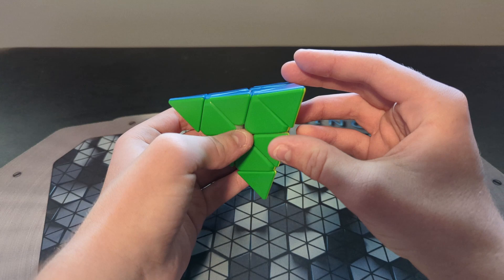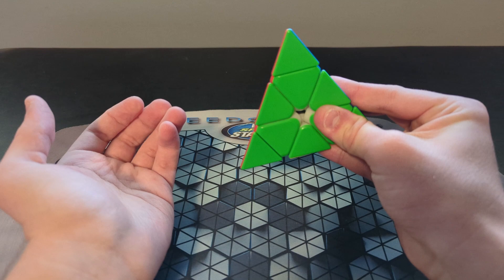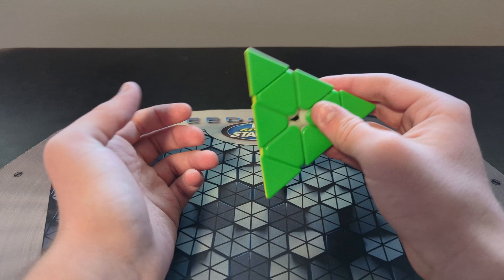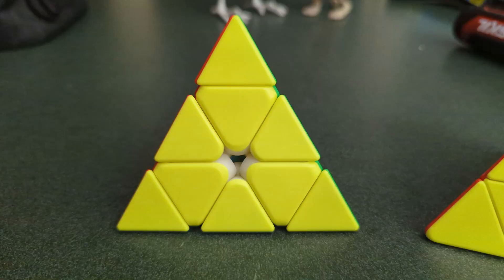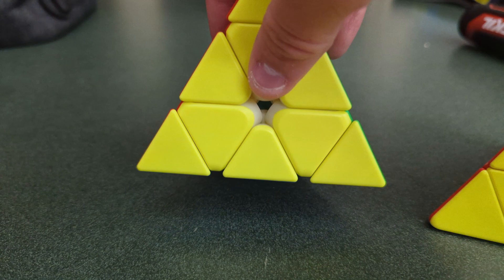I don't mind frosted plastic too much on 3x3s, but on a Pyraminx it's much worse because the angle that you're holding it is smaller, so it's slippery by nature. I'll insert a clip here just showing how much harder it was to hold onto out of the box than the Weilong, which comes with glossy plastic.